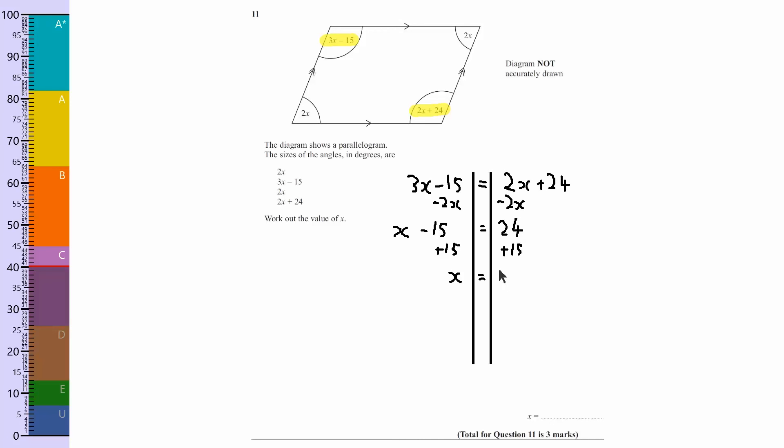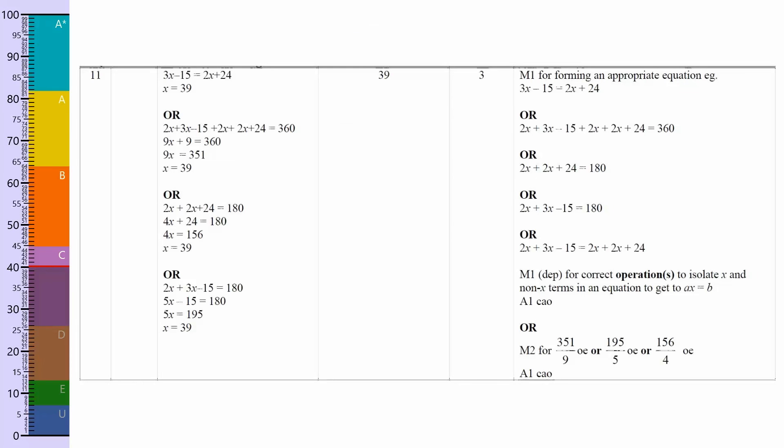So the answer will be 39, and so x equals 39. That's it. That's a complete answer. Let's have a look at the mark scheme. You can see here that they've got the two sides equal to each other and solved it and found out that x is 39.